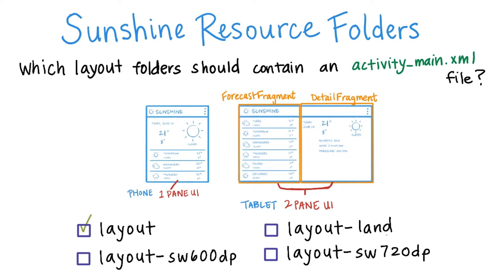We do also need to declare activity_main.xml in the layout-sw600dp folder. That way it will override the one-pane UI and use a two-pane UI. It will be picked up on devices that have greater than 600 dp in both width and height — that means 7-inch and 10-inch devices in both portrait and landscape mode.